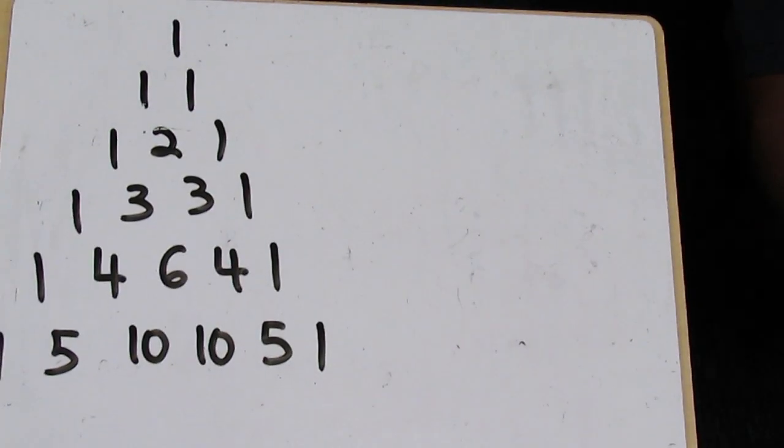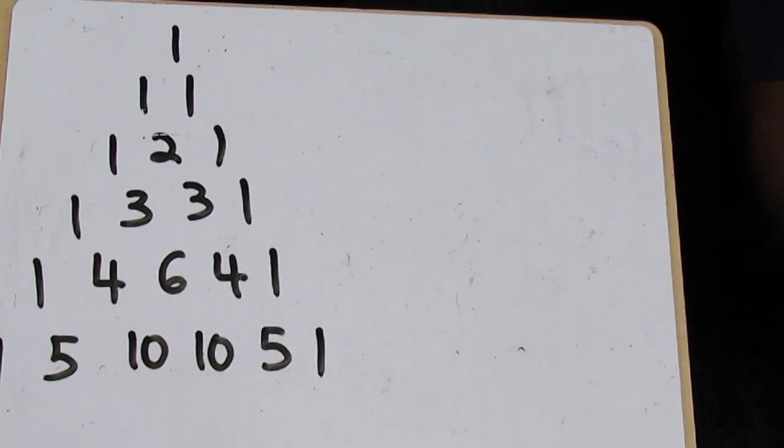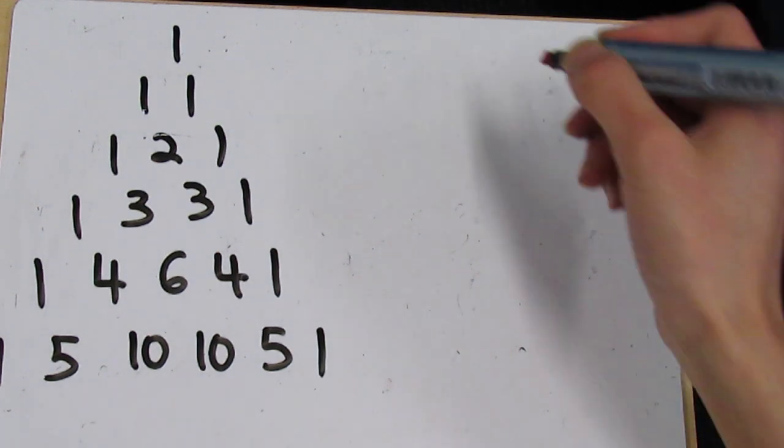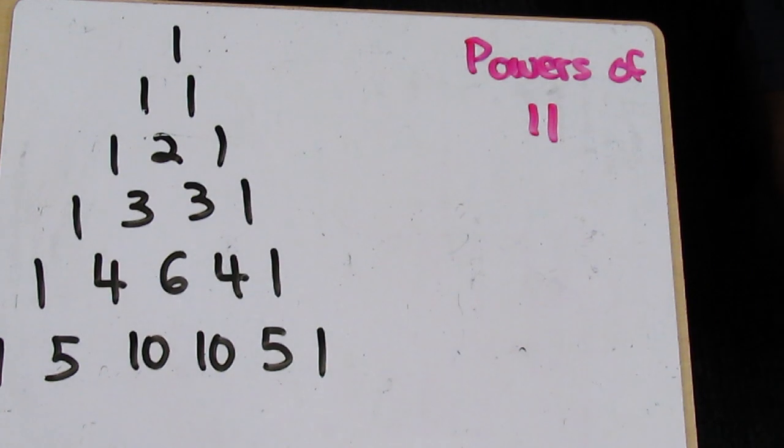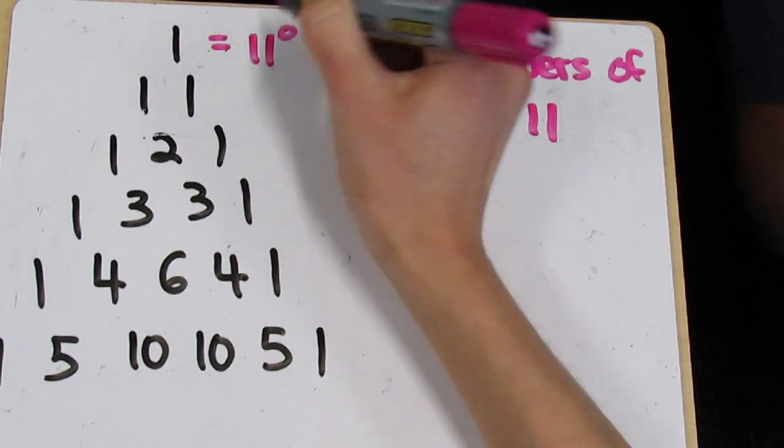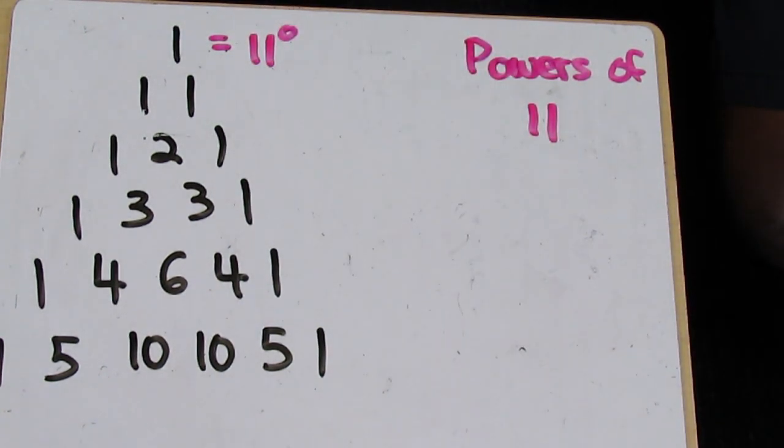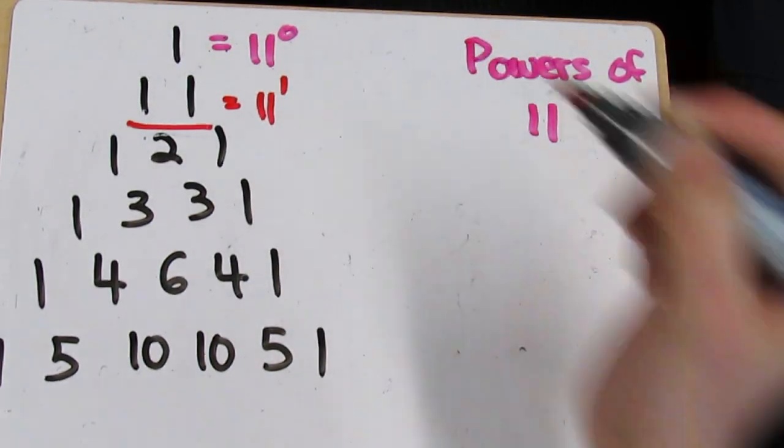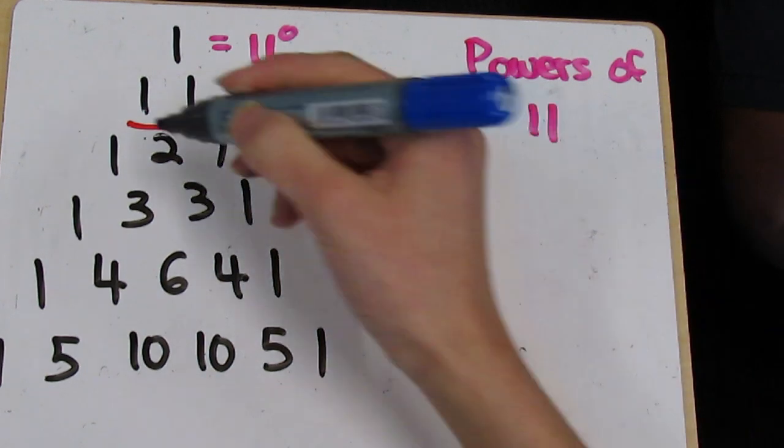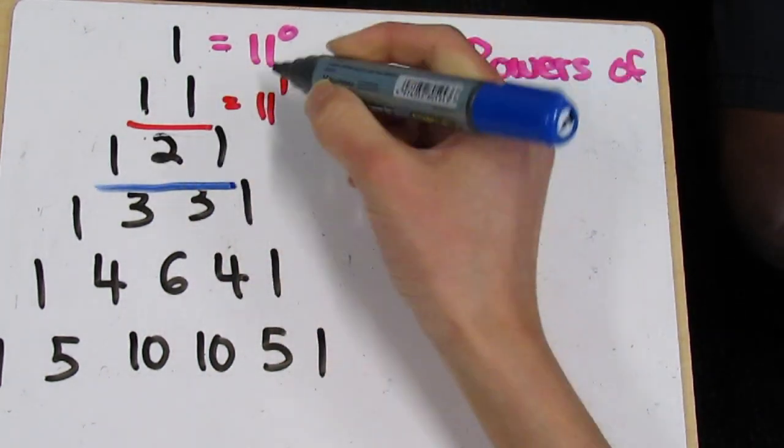Like this pattern, powers of 11 are also shown in Pascal's Triangle, except this time instead of adding the numbers, the numbers themselves are the powers of 11. So 1 is 11 to the power of 0, 11 is 11 to the power of 1, and 121 is 11 to the power of 2, and so on.